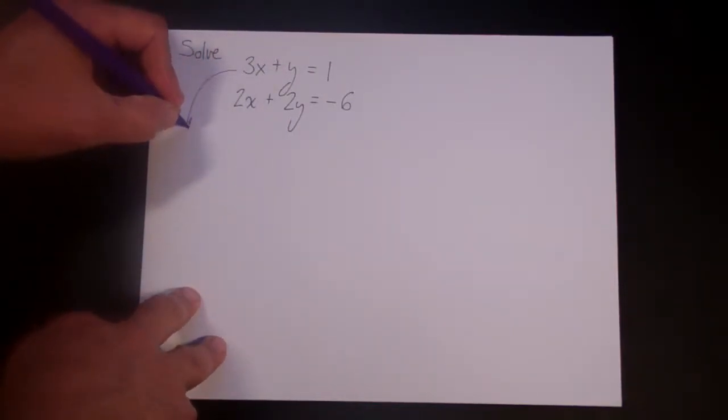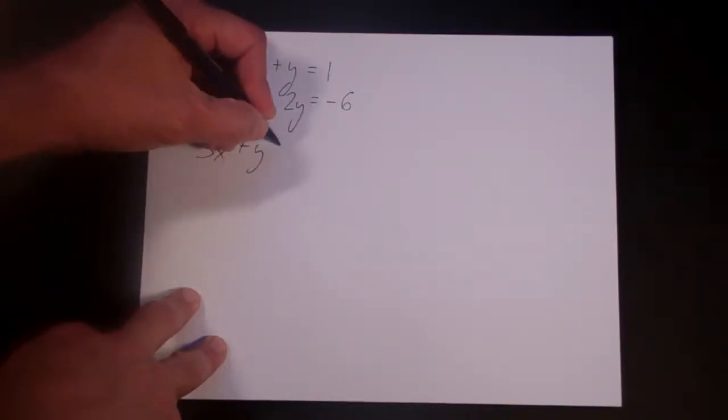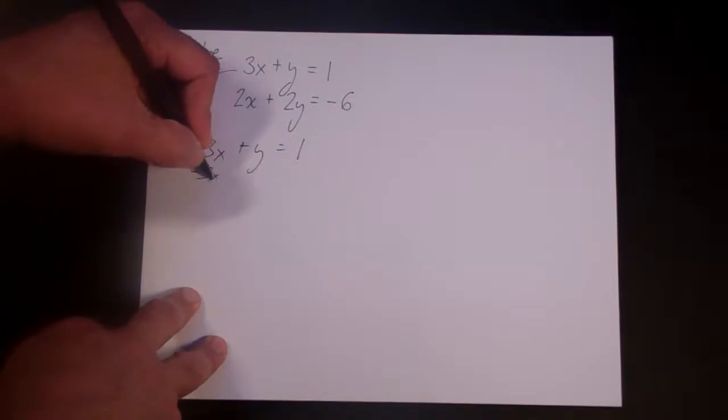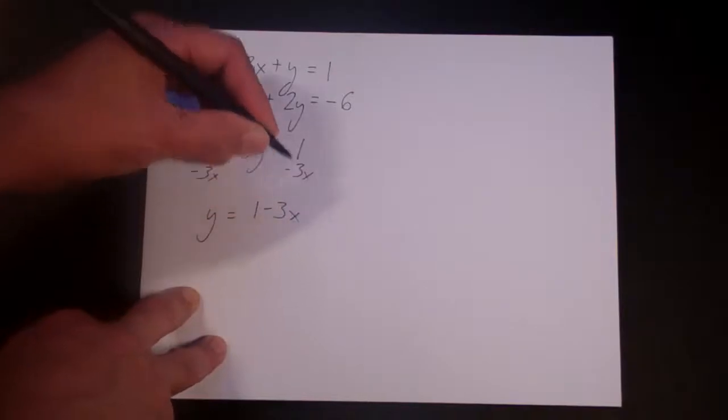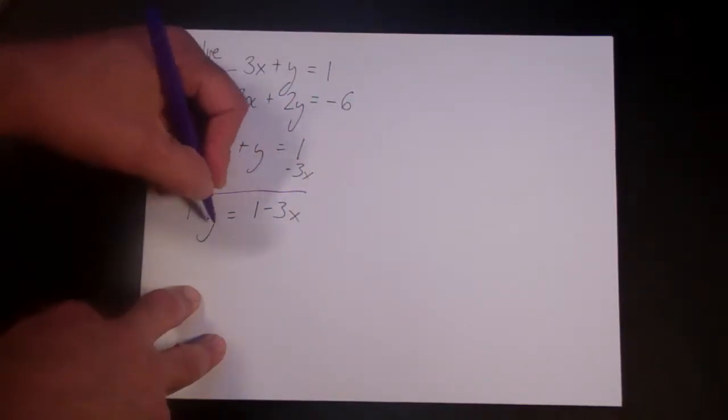So what we want to do is take this equation, 3x plus y is equal to 1, and solve for y. So you subtract 3x from both sides, you get y is equal to 1 minus 3x, and then there's nothing more you can do there. So let's just circle that.